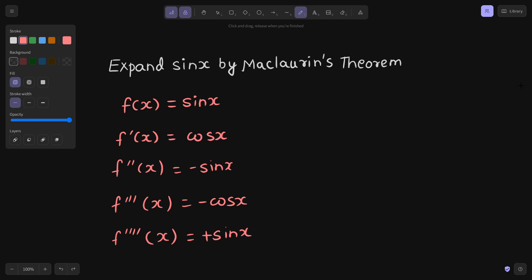Now for every step, find the values at 0. So we will find f(0), that is sine 0 is 0. We will find f'(0), so cos 0 is 1. We will find f''(0), so sine 0 is again 0. Third derivative at 0, so cos 0 is 1, so negative 1. And fourth derivative at 0, that is again 0.